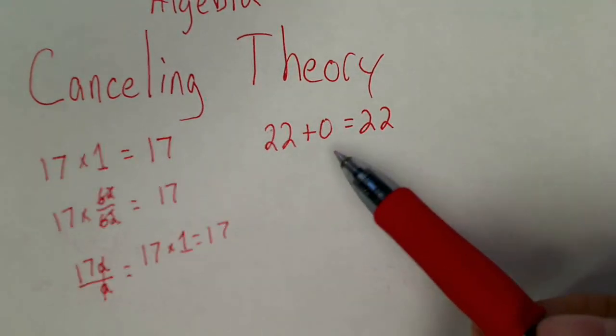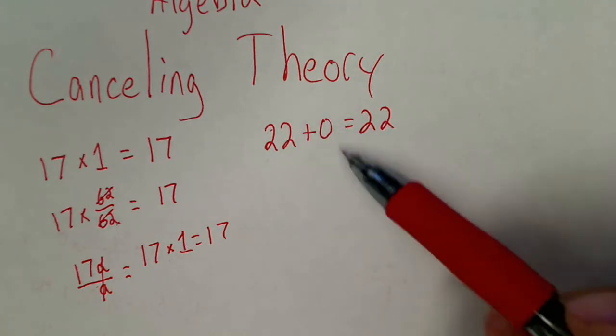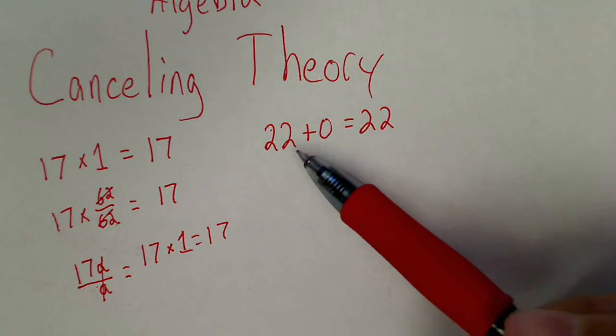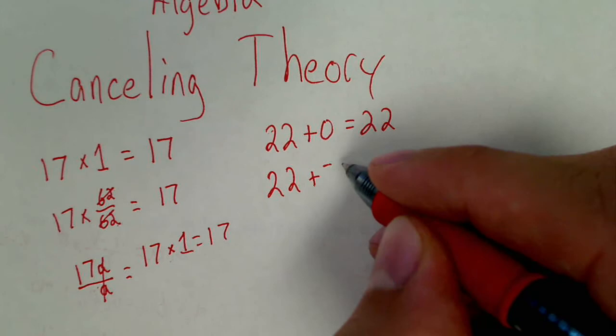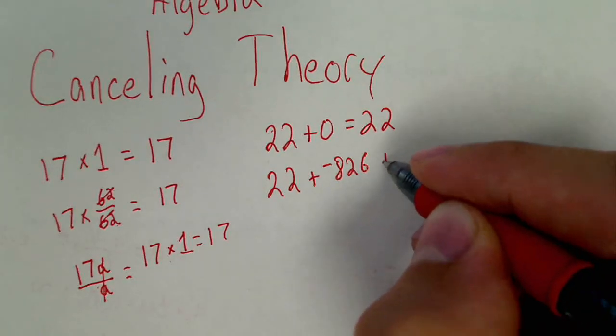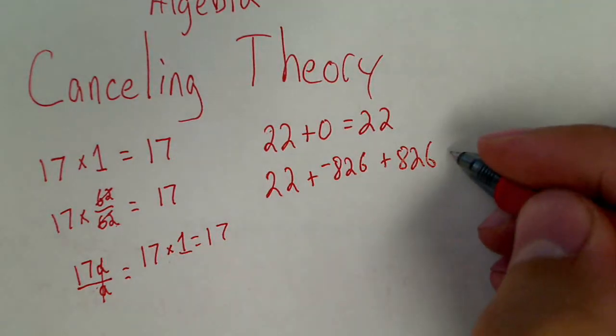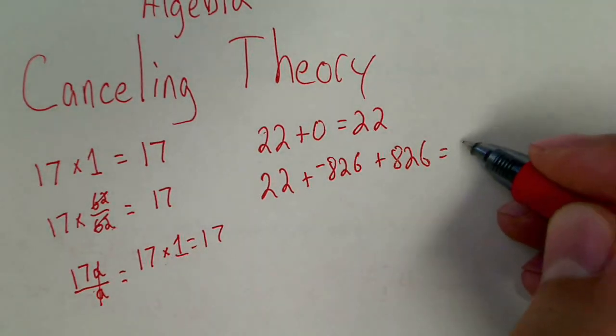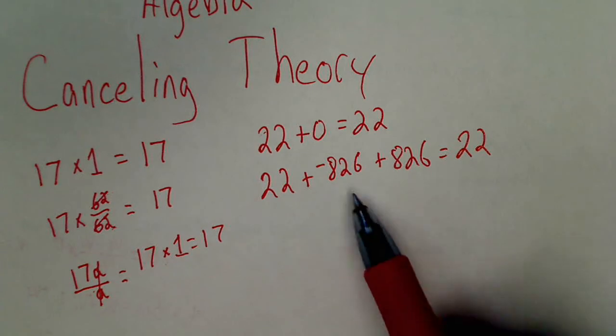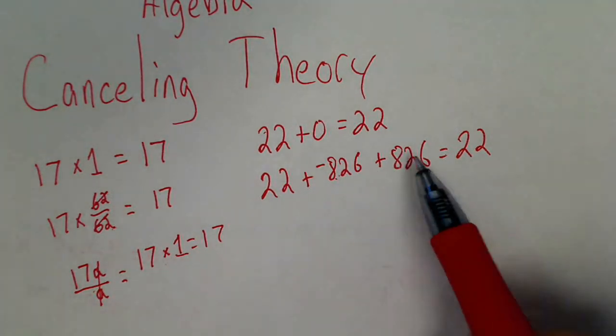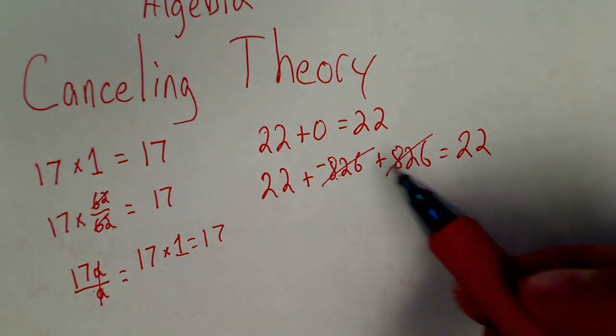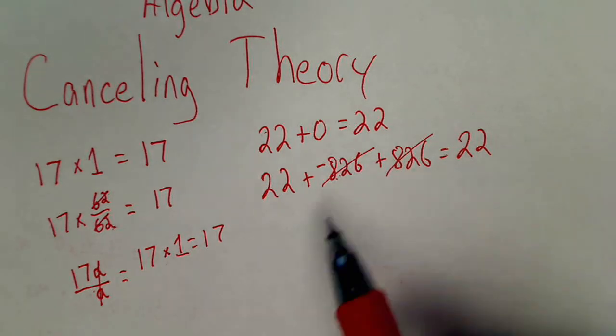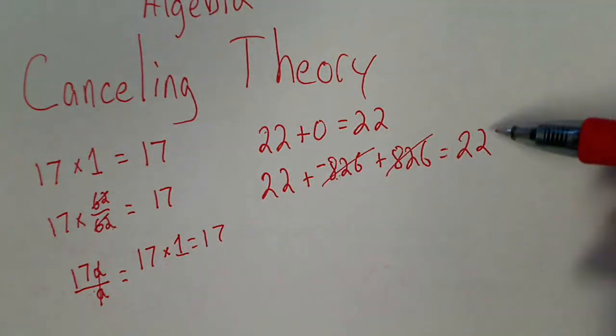When we're talking about addition, 22 plus 0, if we add 0, we do not change the original value. So that means it's the same thing if I said 22 plus, you know, negative 826 plus 826. Well, we can see this is just 22. Because this whole thing in the middle, negative 826 and 826, that cancels out. Because anything added to its negative is 0. So this is still the same formula. This is the exact same problem and stuff in this line and this line. I've just written it differently.